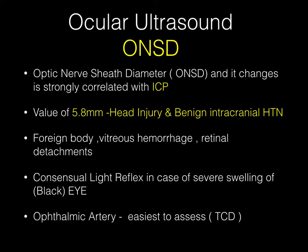Ultrasound can capture the same finding without the expensive cost of MRI. We can see the optic nerve and optic nerve sheath. A value of 5.8 mm or more has been linked to increased intracranial hypertension in adults. So if somebody's optic nerve sheath diameter is more than 5.8 mm in the correct clinical context, you are on the right path.